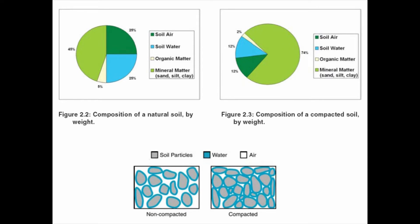A non-compacted soil has lots of air spaces with water surrounding the soil particles. When you compact the soil, those air spaces are squeezed out, and as a result more water is held there. This is the physical reason why compacted soils are often associated with being wet.